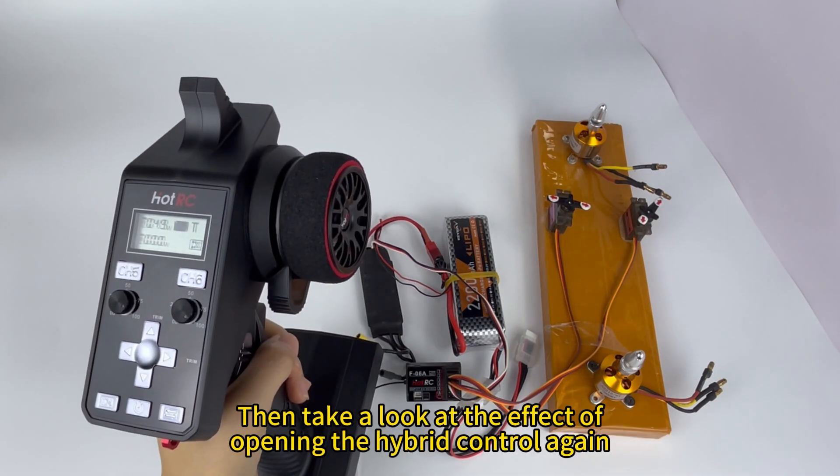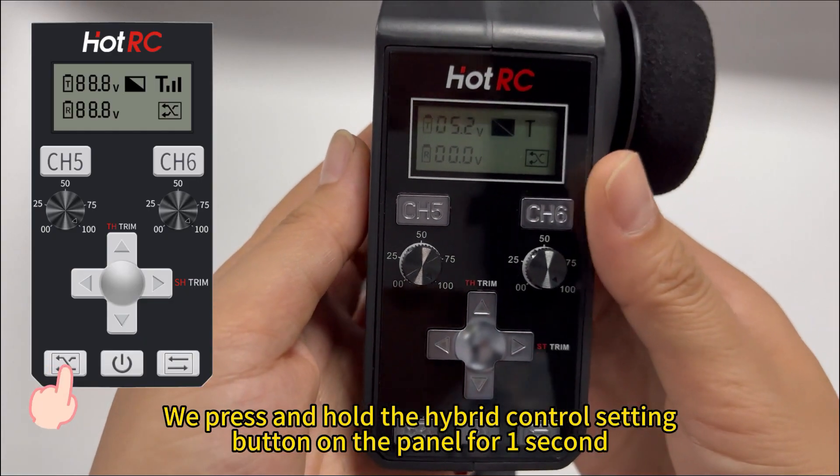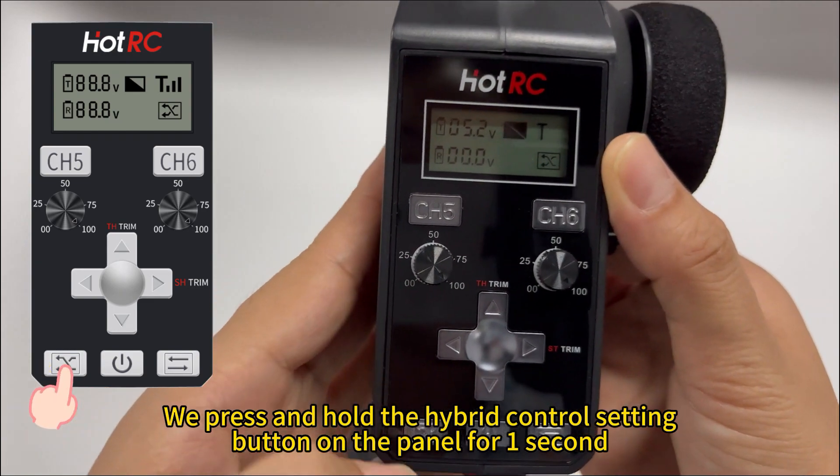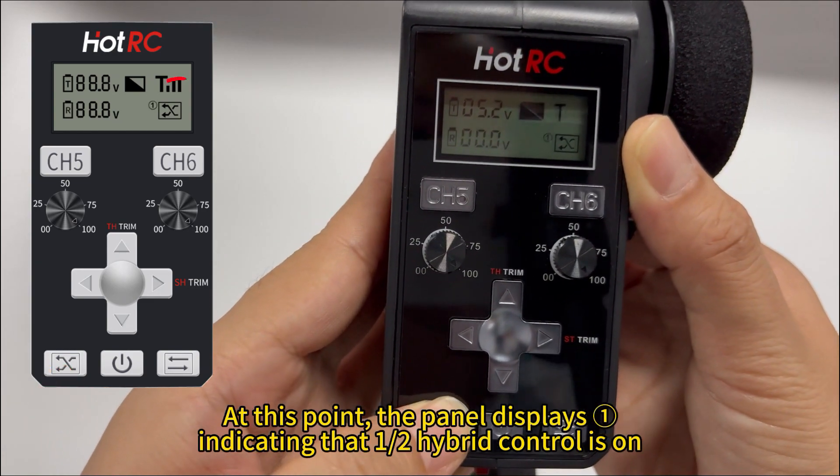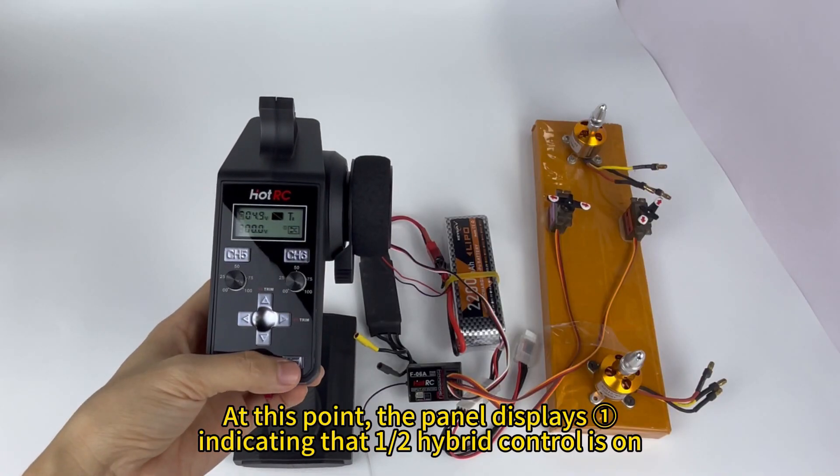Now let's look at the effect of enabling hybrid control. We press and hold the hybrid control setting button on the panel for one second. At this point, the panel displays 1, indicating that 1/2 hybrid control is on.